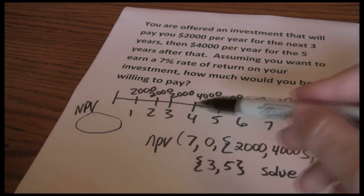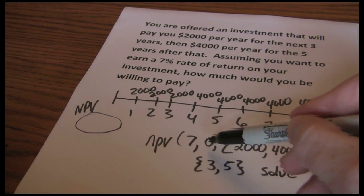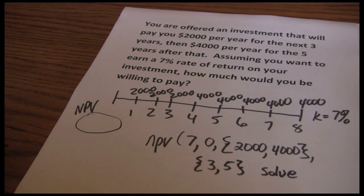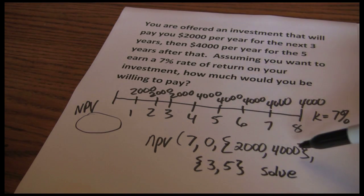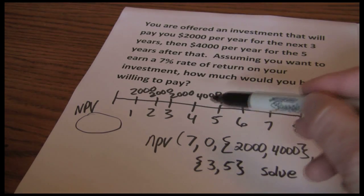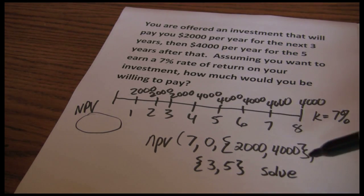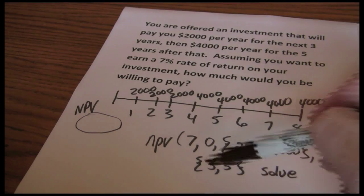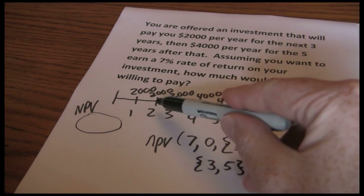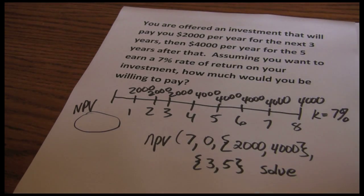So to summarize: Net Present Value — interest rate, CF0 (which in this case is zero), cash flow sequences (first sequence is $2,000, next is $4,000), and frequencies: three and five. Then solve.